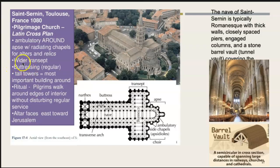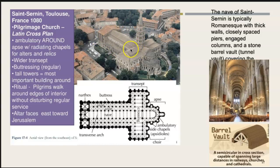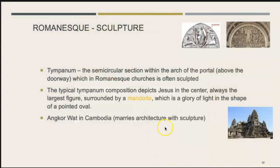You also have a wider transept and buttressing — regular structural supports. We'll see flying buttresses when we look at Notre-Dame. There are also tall towers; the tower marks the most important part of the church. Barrel vaults are semicircular in cross-section and capable of spanning large distances in railways, churches, and cathedrals.